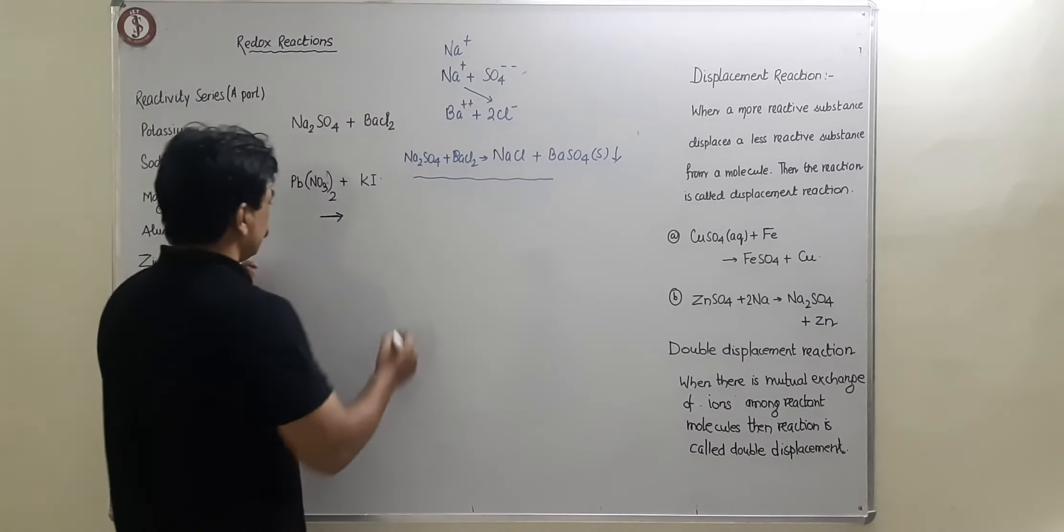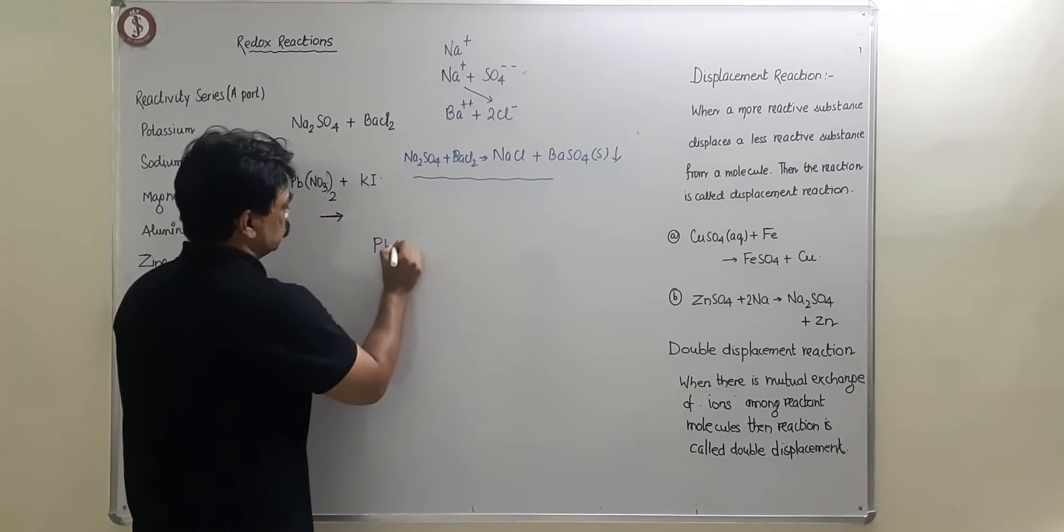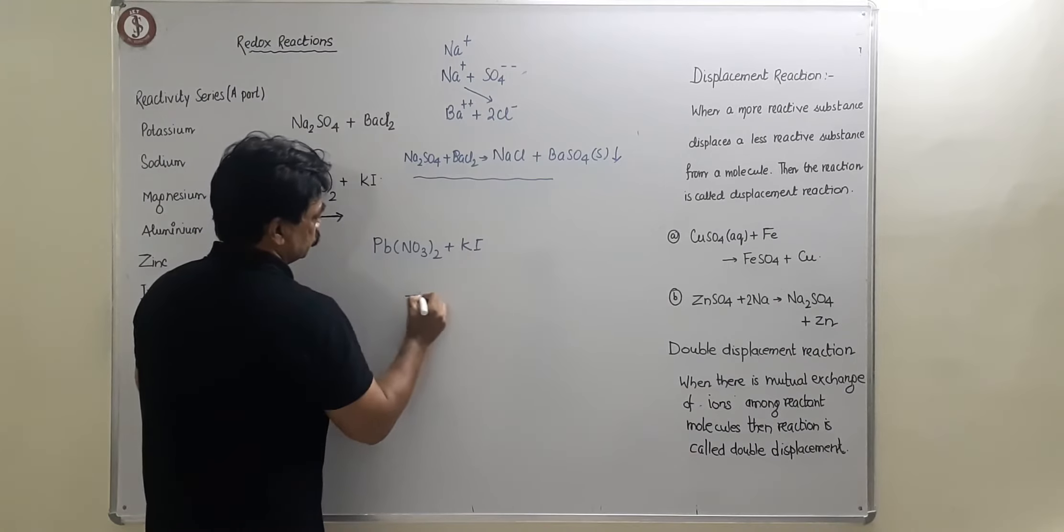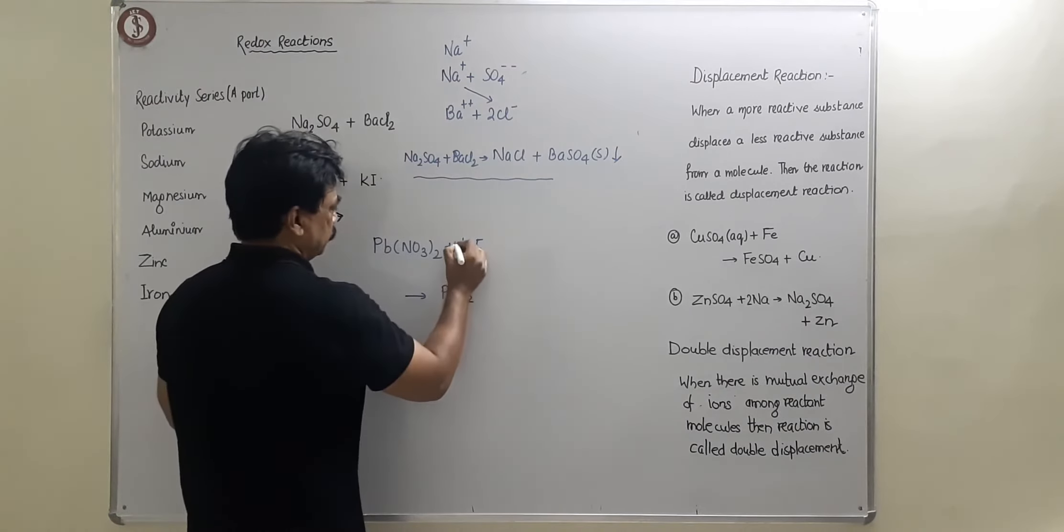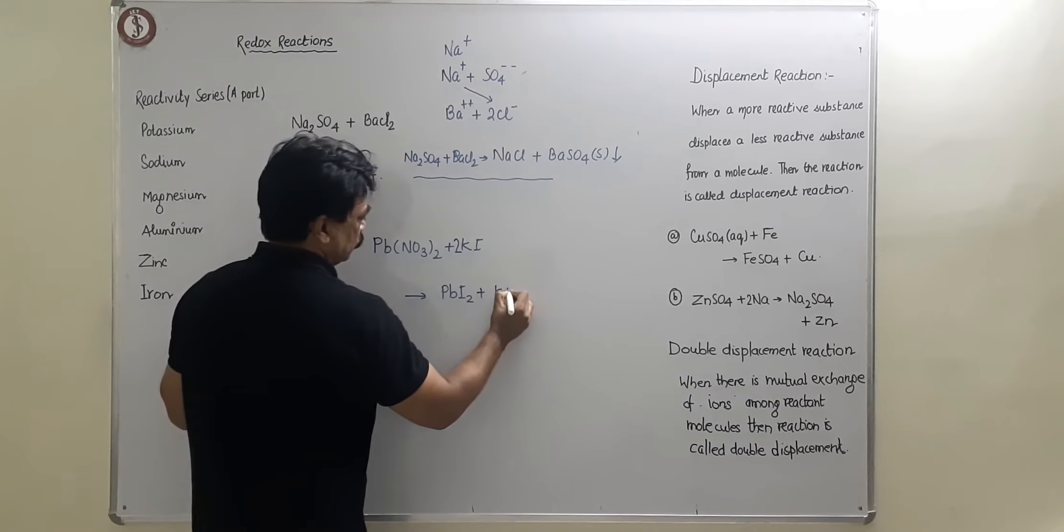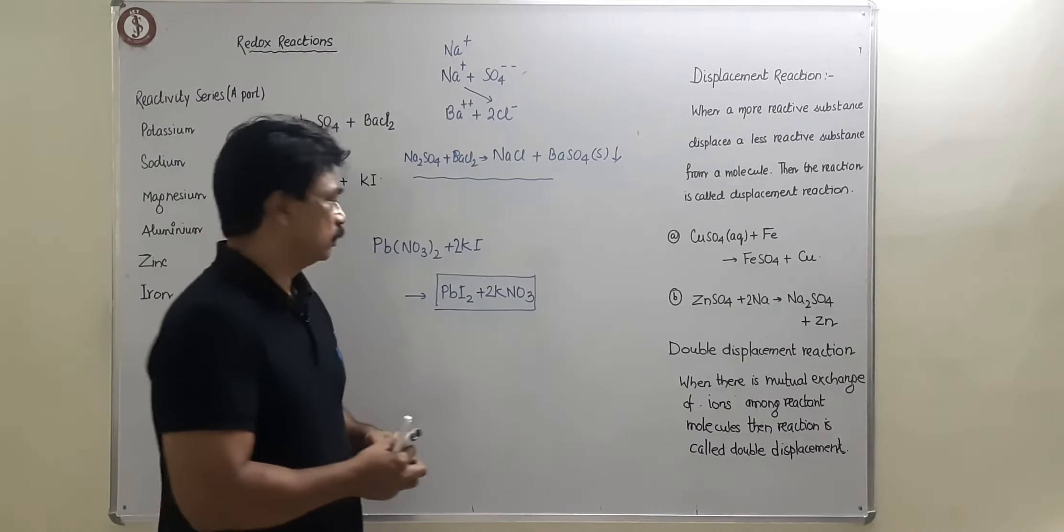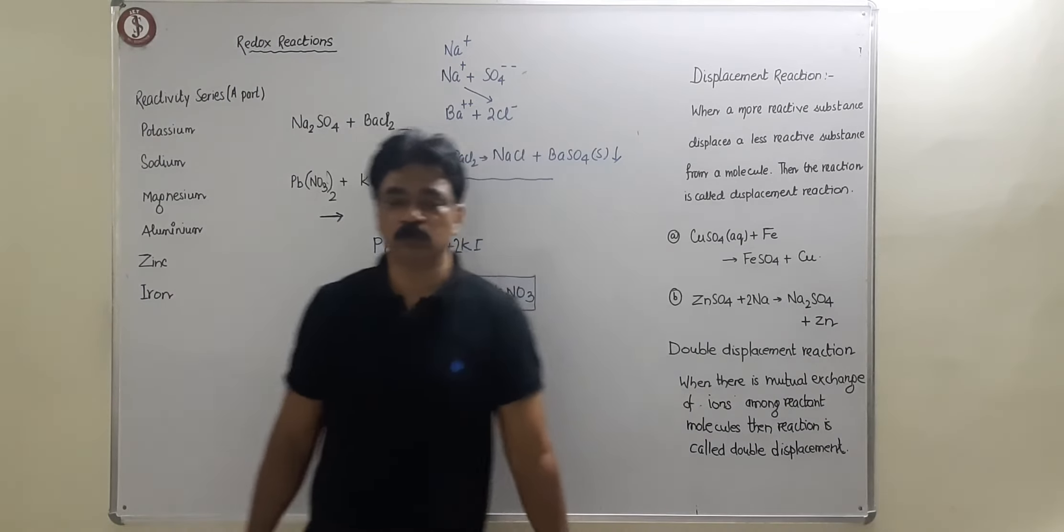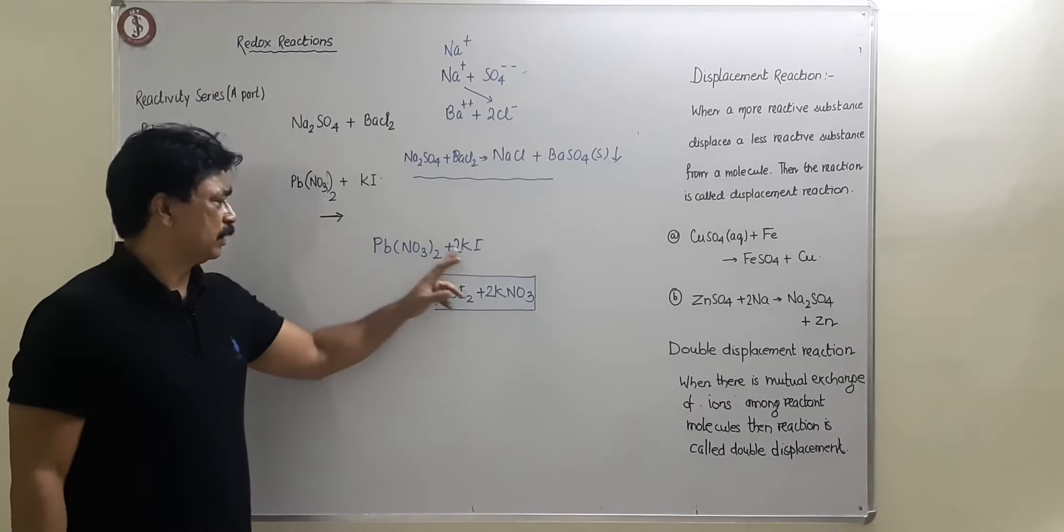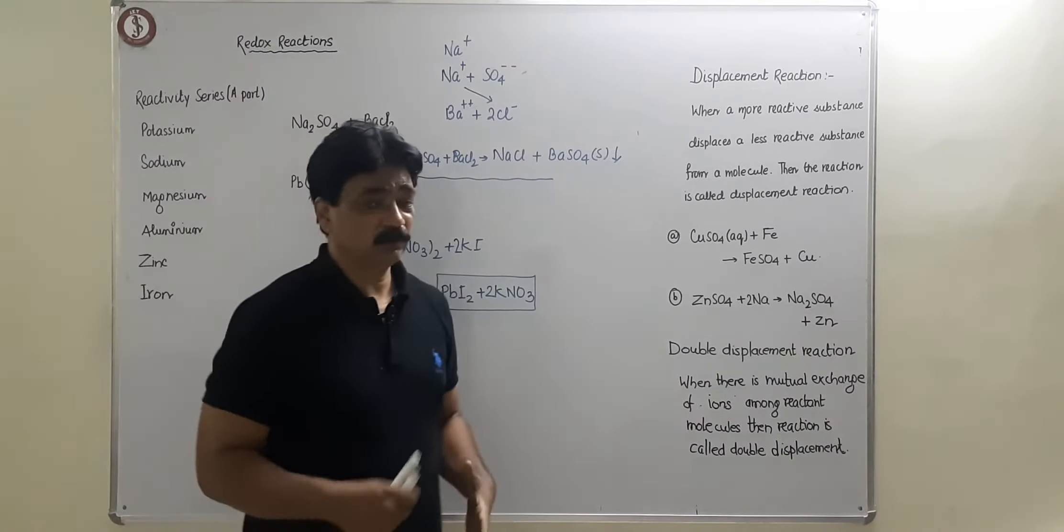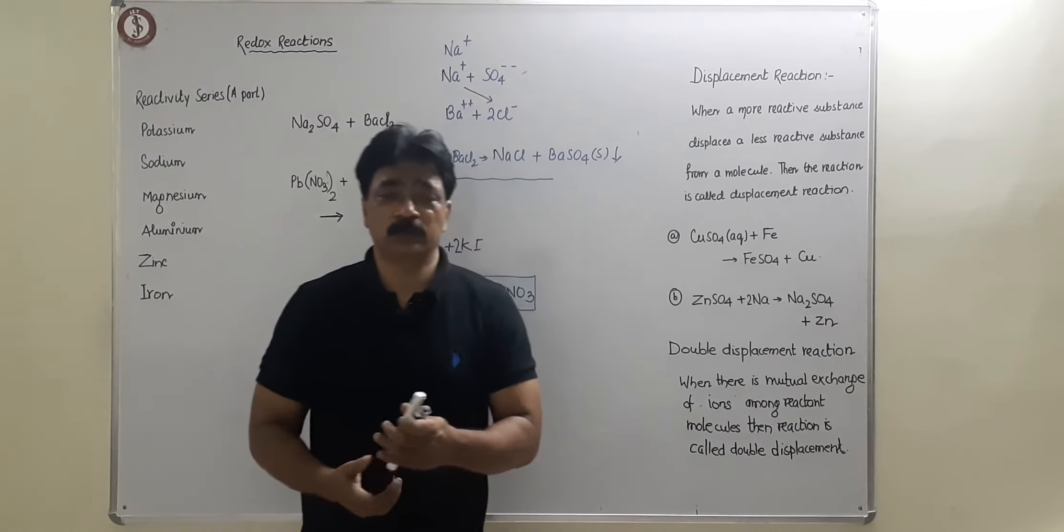Next is lead nitrate plus potassium iodide, then PbI2, then KNO3. Now there is a mutual exchange of radicals over here also. Nitrate has exchanged itself with potassium and iodine has exchanged itself with lead. So mutual exchange of radicals takes place in double displacement reaction.